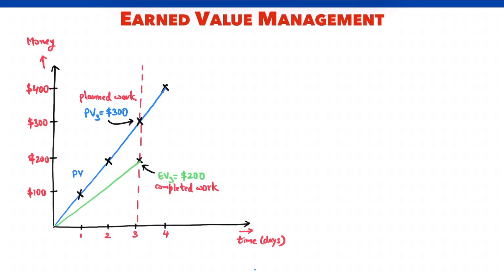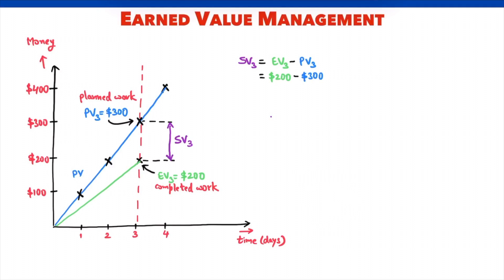How do we quantify this delay? The gap between planned value and earned value is the schedule variance. Schedule variance is simply earned value minus planned value. Earned value is $200, planned value is $300, so schedule variance is minus $100.